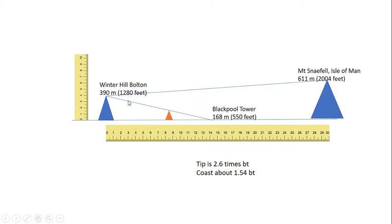There's quite a large gap. You can see that the angle between them is quite large. And as I showed last time, you can draw three Blackpool Towers, almost three, so just under three Blackpool Towers, to intersect with Mount Snaefell.